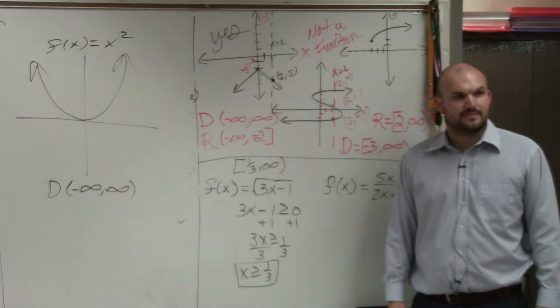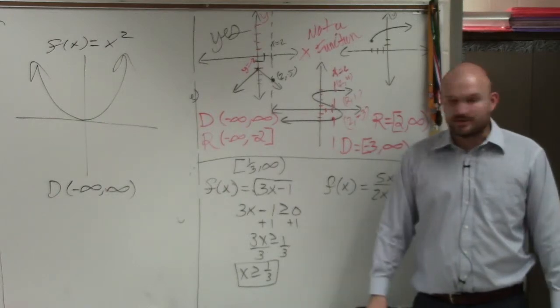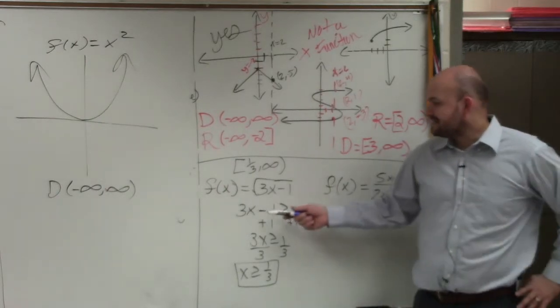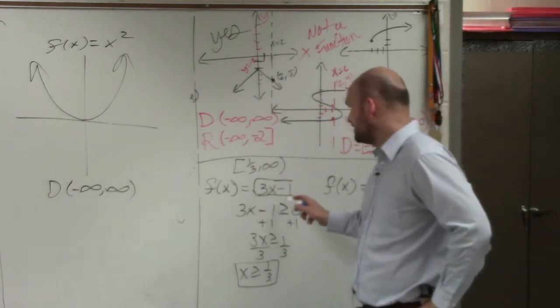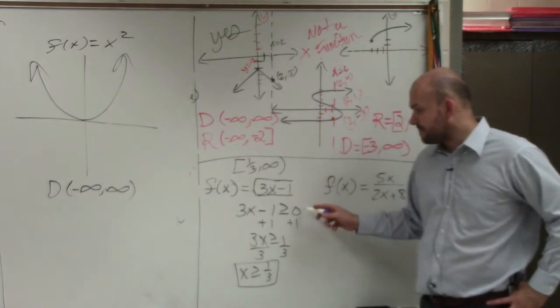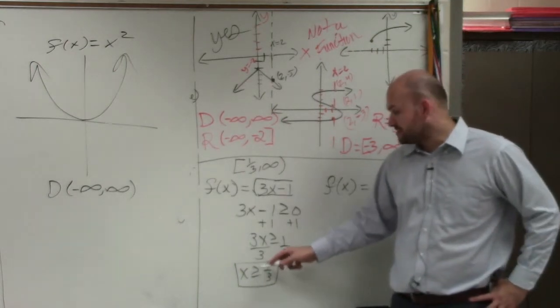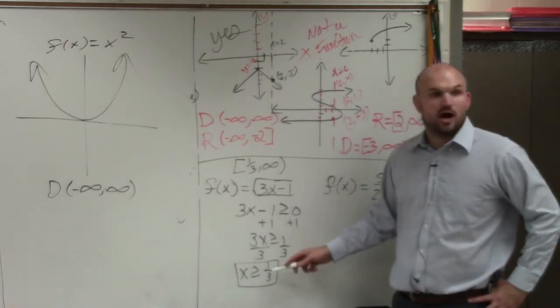Anybody have any questions on that? Let's think about it this way. I said 3x minus 1 has to be greater than or equal to zero. But basically, all you do is you take your radicand and you make it greater than or equal to zero. So we're saying all numbers that are greater than or equal to 1 third are a part of your domain.